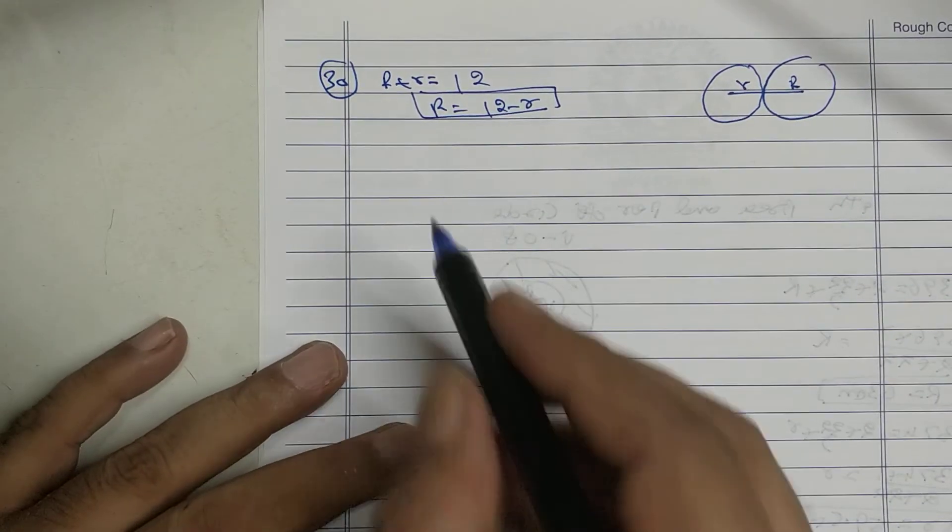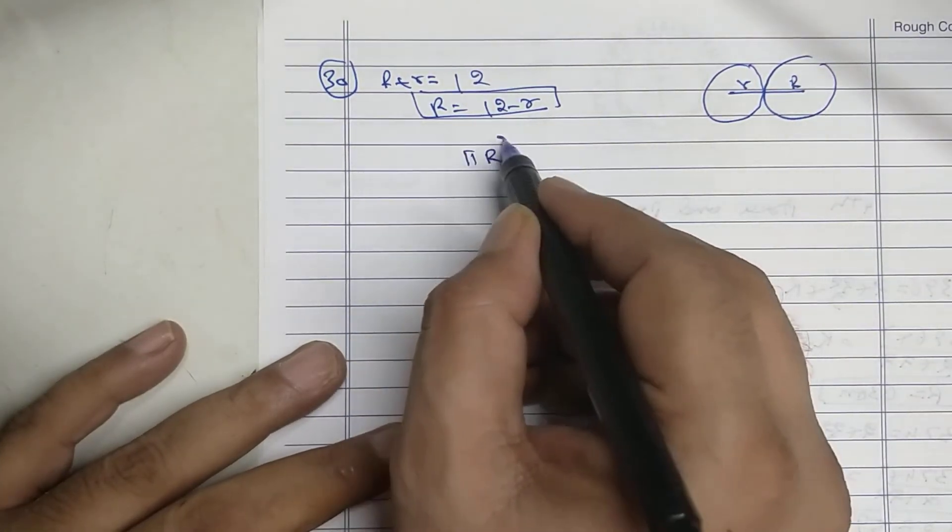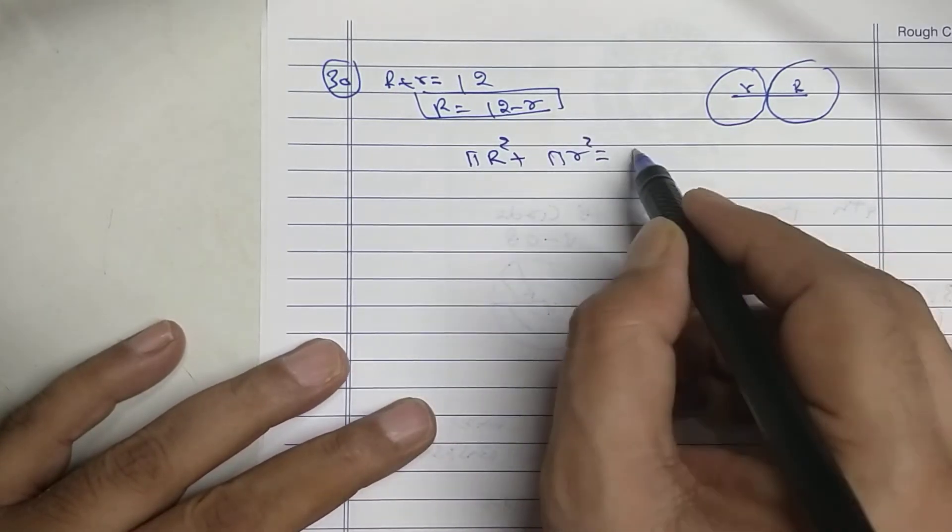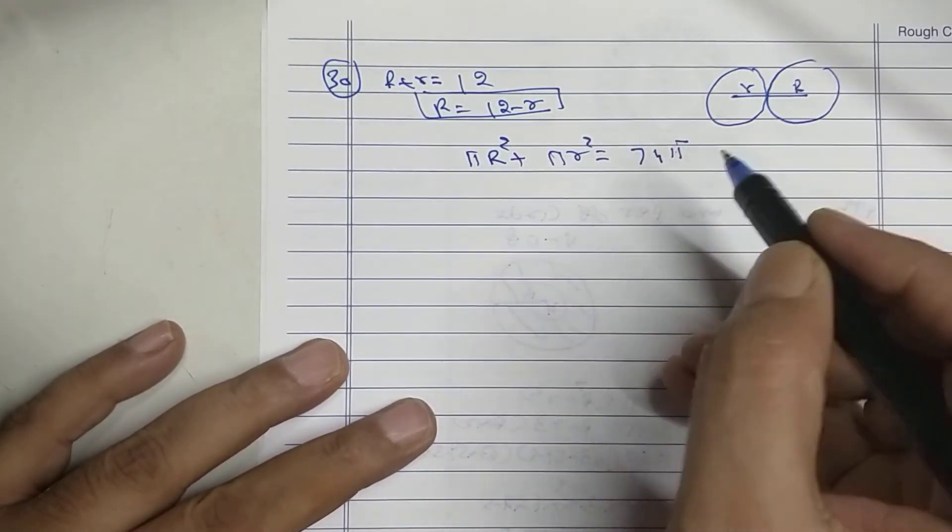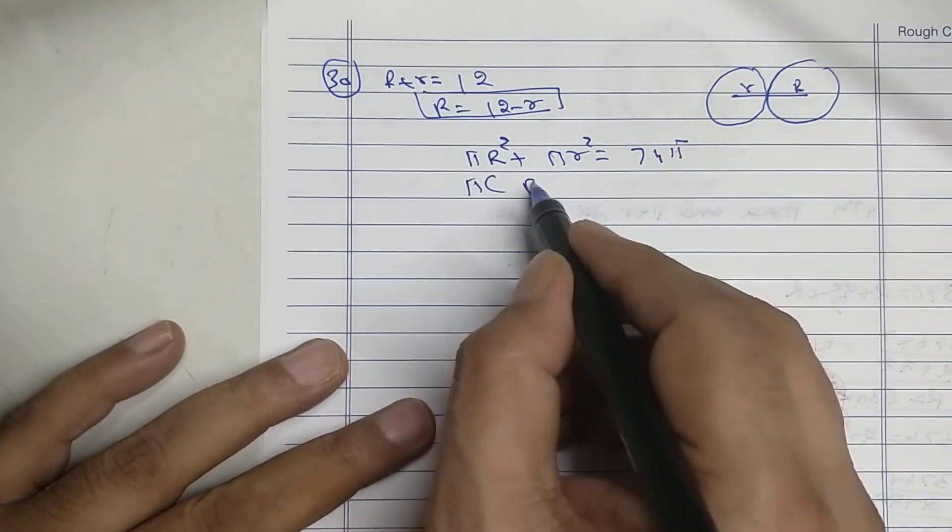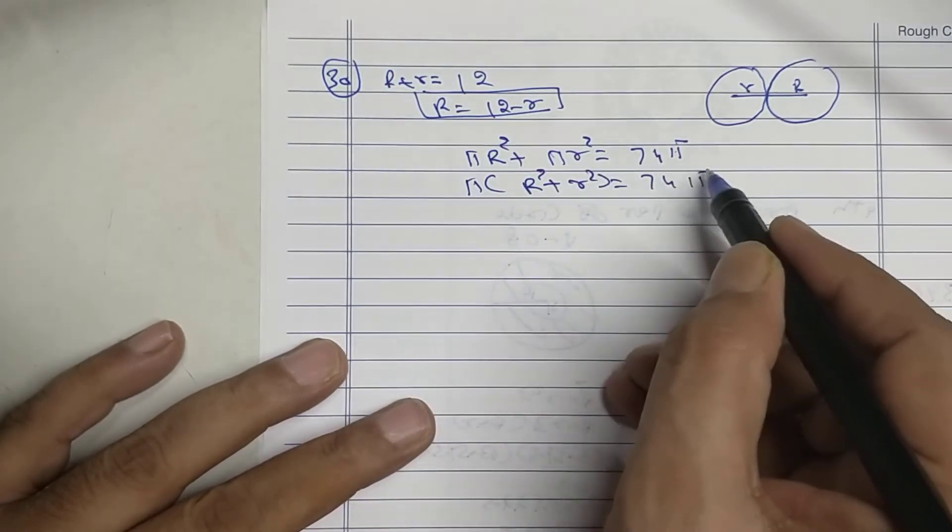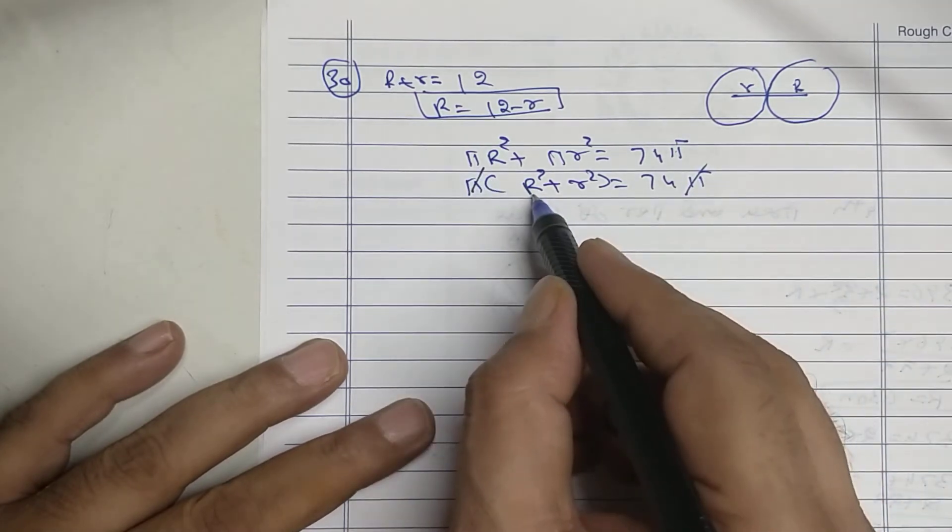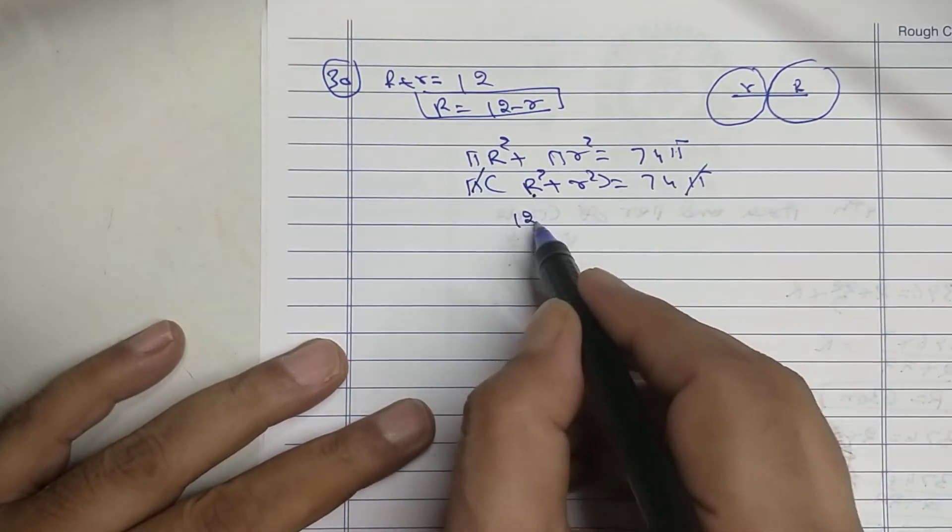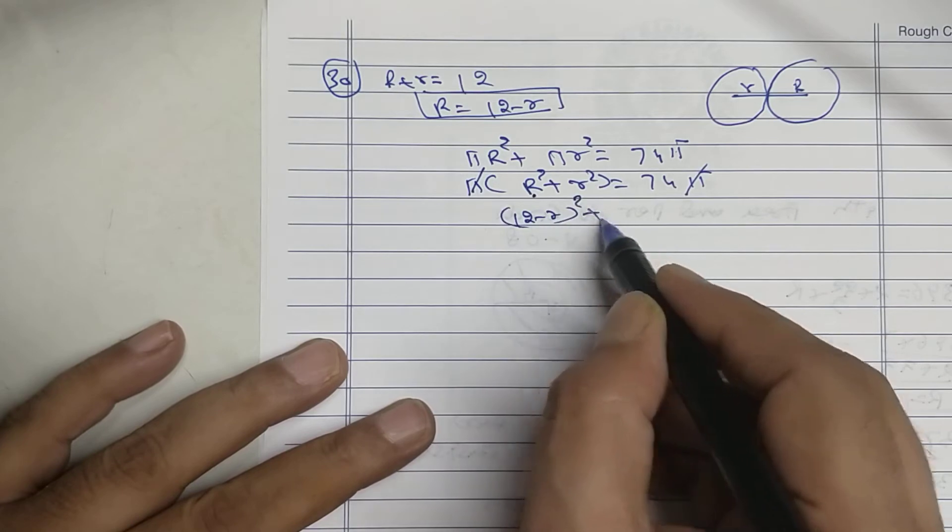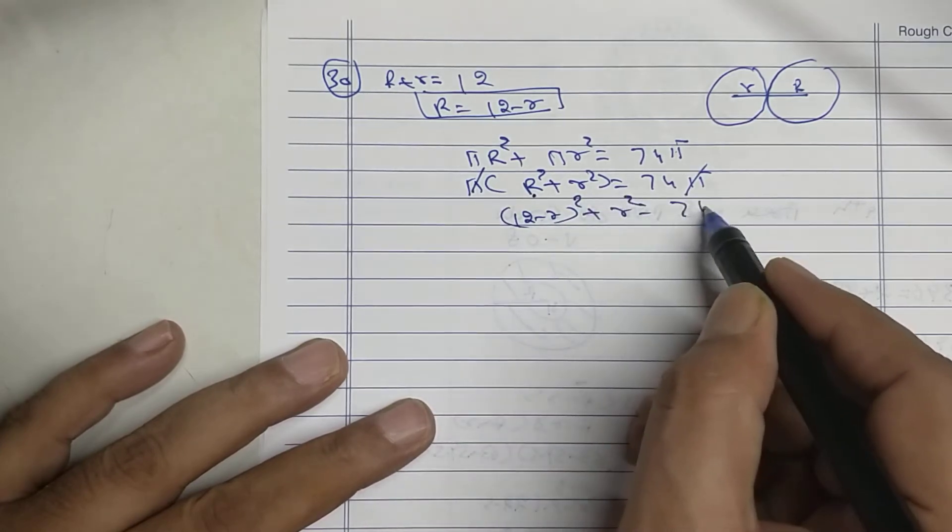Sum of their area: pi r square plus small r square equal to 74 pi. Pi common: r square plus small r square equal to 74 pi.